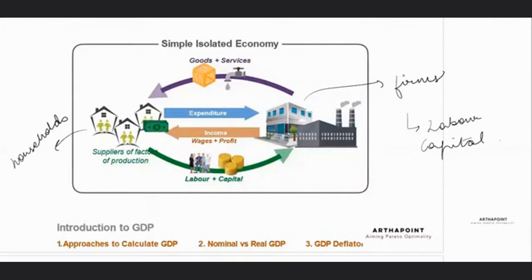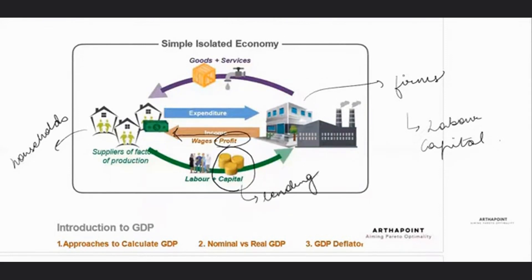The factors of production — labor — go to the companies. They work in the companies and in exchange, the companies give them wages. If somebody is giving their capital to the company, the company gives them profit. So some people are lending their capital, maybe their land, to the company. Others are giving their labor, and in either case, the firm is giving back some profit or wages to these suppliers of factors of production.